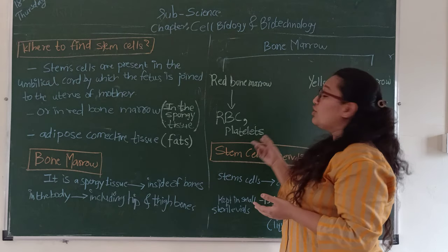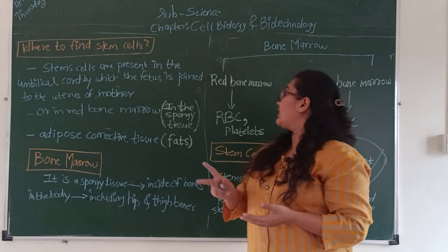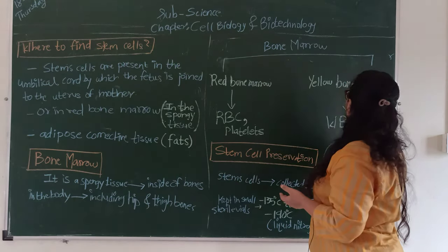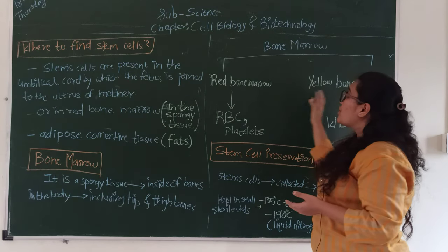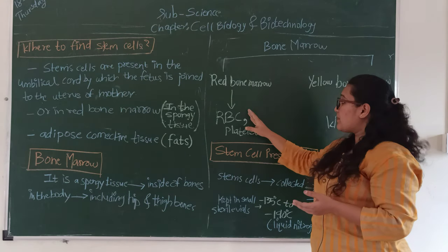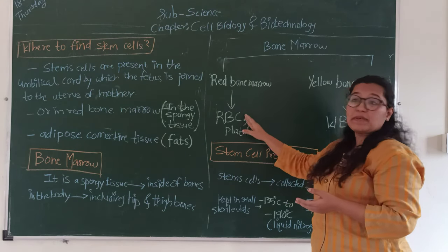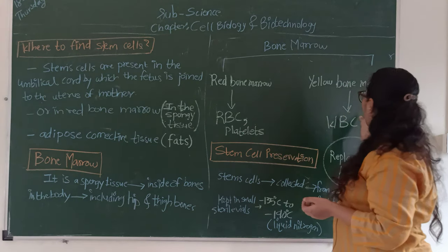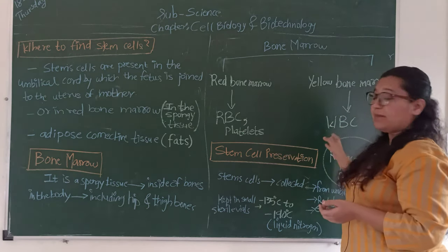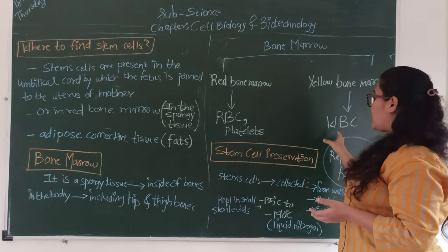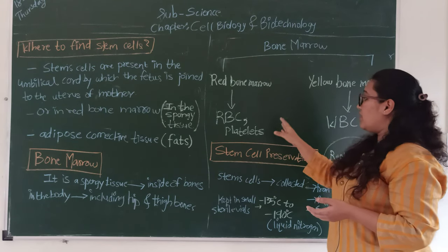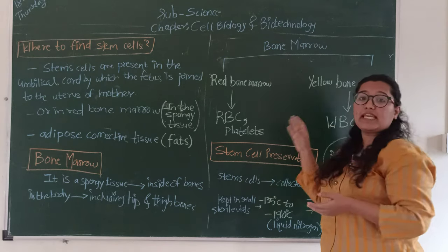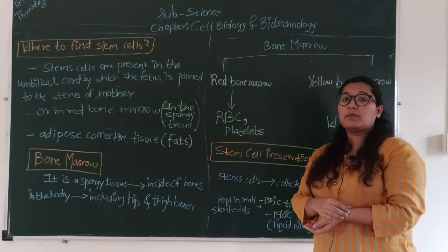Bone marrow is of two types: red bone marrow and yellow bone marrow. Red bone marrow produces red blood cells (RBC) and platelets. Yellow bone marrow produces white blood cells (WBC). Red blood cells, platelets, and WBC are the three components found in blood.